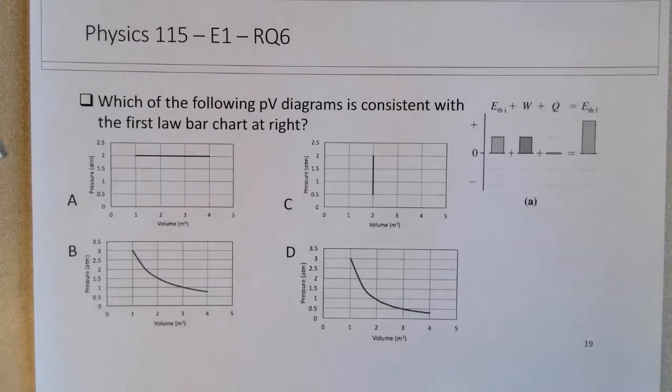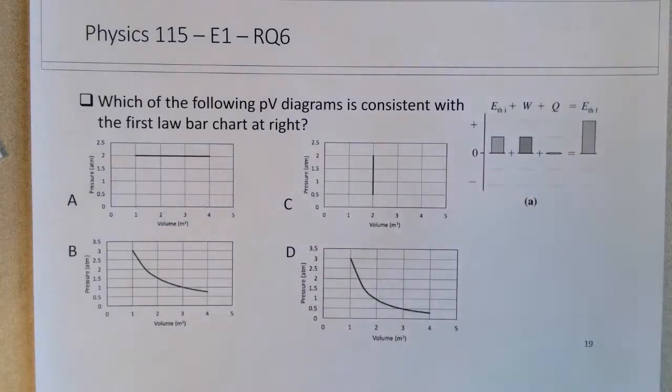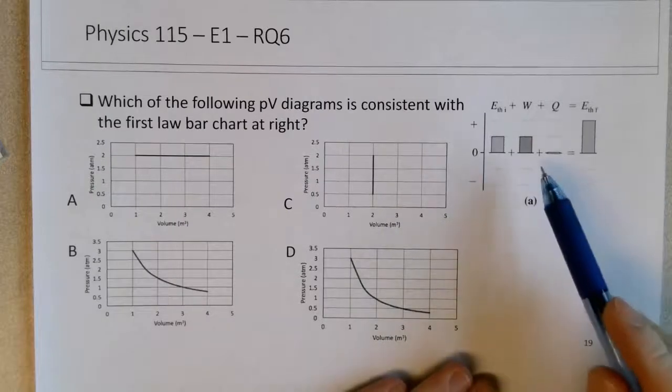Review question 6 for exam 1, now switched into the topics of PV diagrams and what we refer to here as a first law bar chart. Let's see a first law bar chart here, and then we're given four choices which of the PV diagrams is consistent with this particular first law bar chart. The first step would be to analyze what's happening in the first law bar chart and what information can we draw from here.